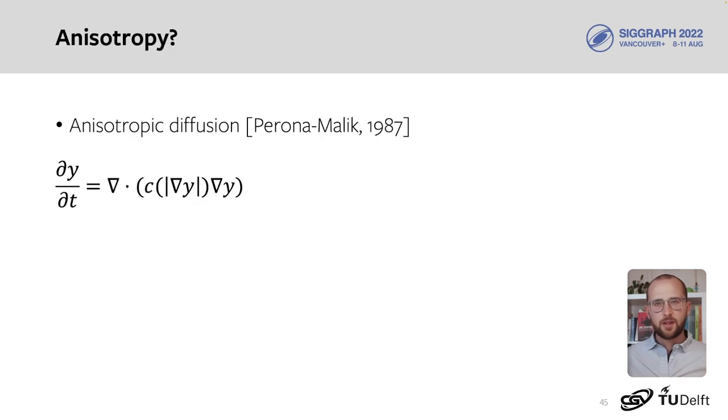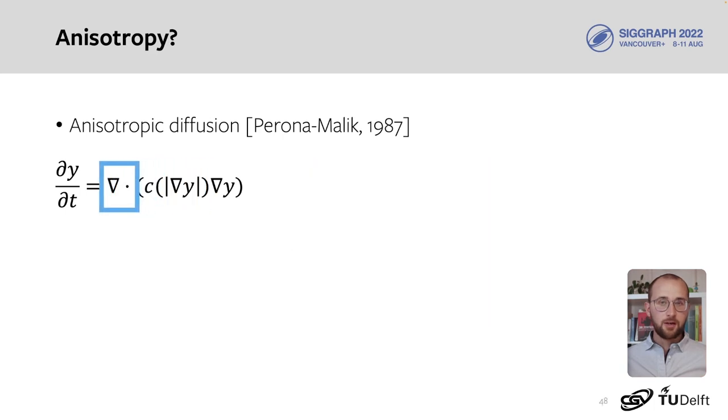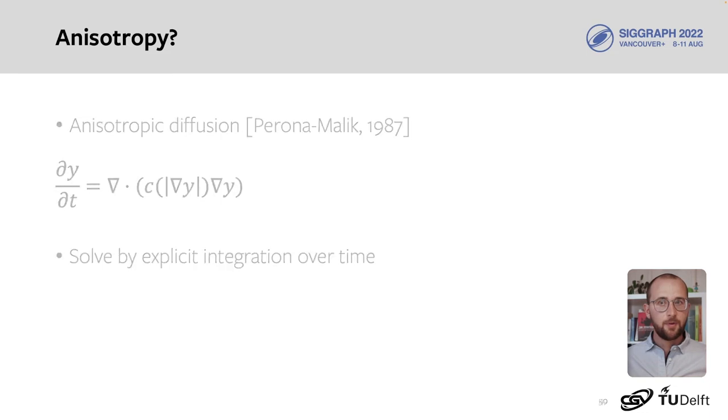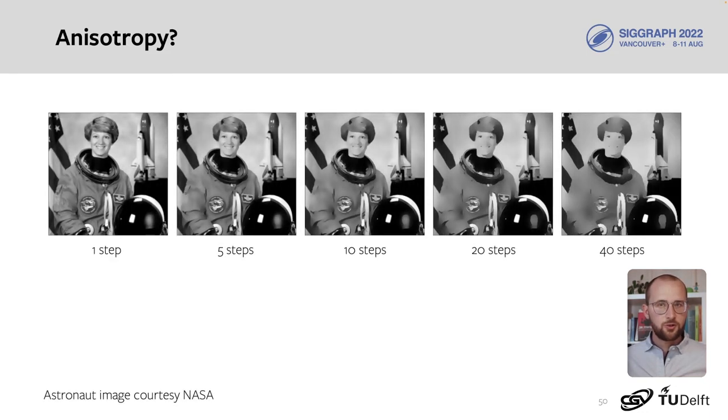What did we achieve? First, we met our goal of creating directional filters. A good way to illustrate this is with anisotropic diffusion as proposed by Perona and Malik. Here, the change of a function over time is described with the gradient, a nonlinearity applied to the gradient vector norms, and divergence. We can solve this equation by integrating over time. As the number of time steps increases, the signal is diffused along certain directions. The result is that edges are preserved.